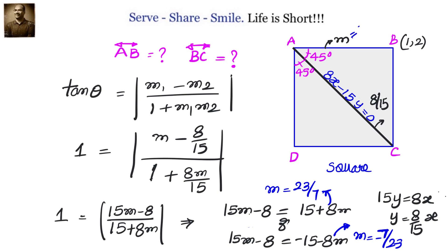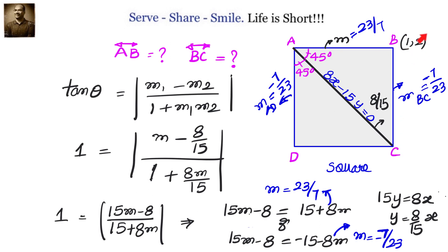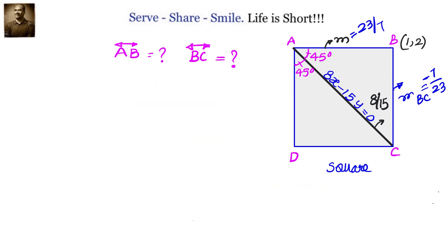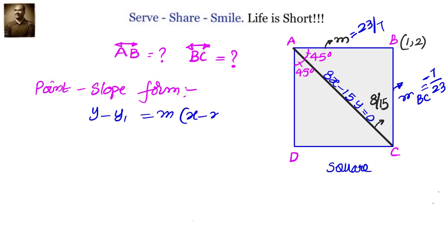Once we know the slopes and have the point, we can find the equations of AB and BC using point-slope form. Note: when we apply the angle formula we actually get slopes of AB and AD, but AD and BC are parallel lines so they share the same slope. The point-slope form is: y minus y1 equals M times (x minus x1), where (x1, y1) is a point on the line.